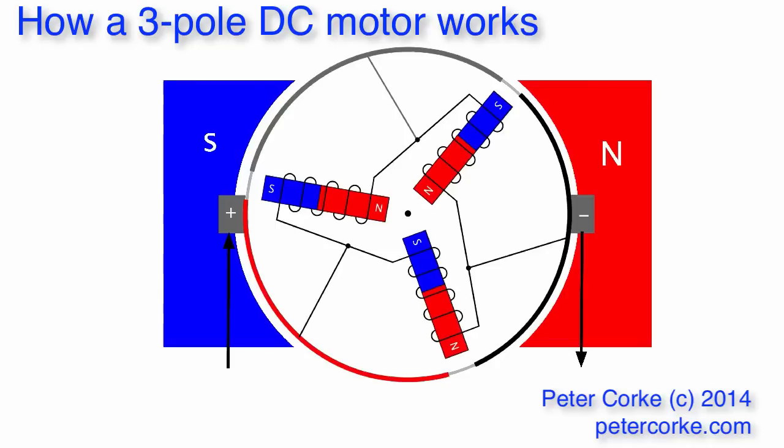There are two brushes and there are three commutator segments. At any one point in time, the positive brush is connected to one commutator segment. The negative brush is connected to another commutator segment and one commutator segment is not connected to anything.